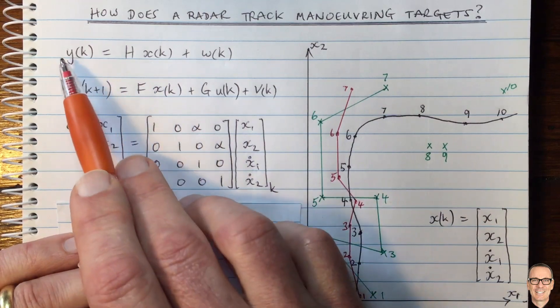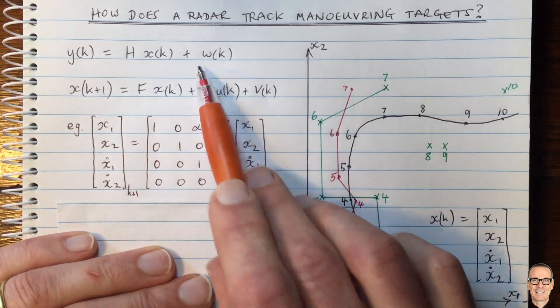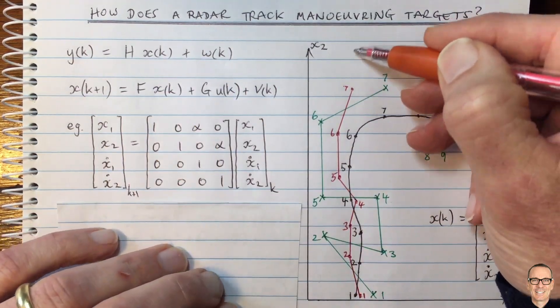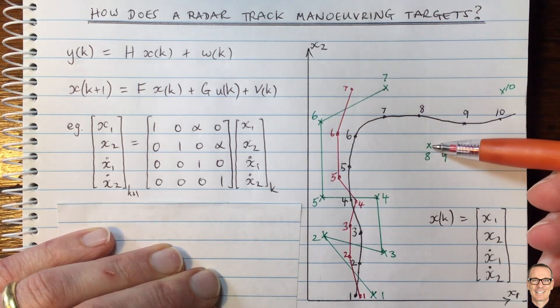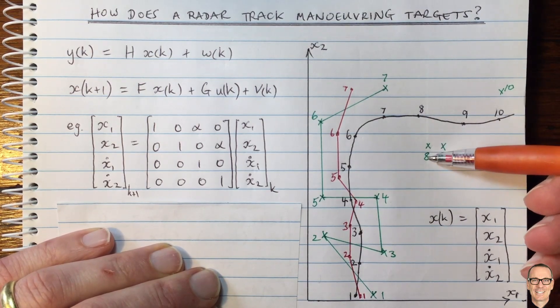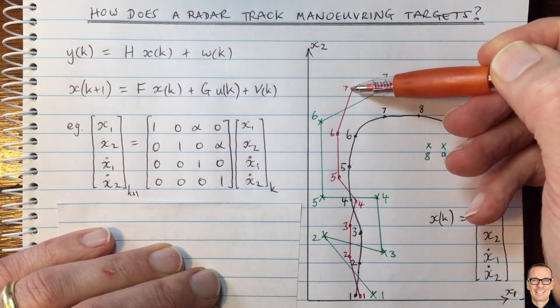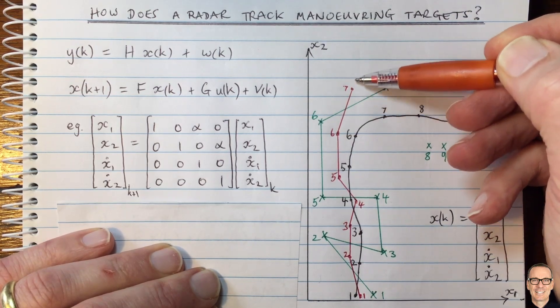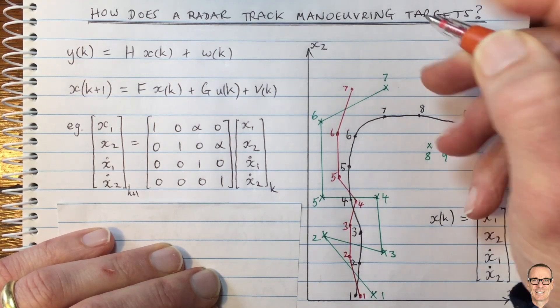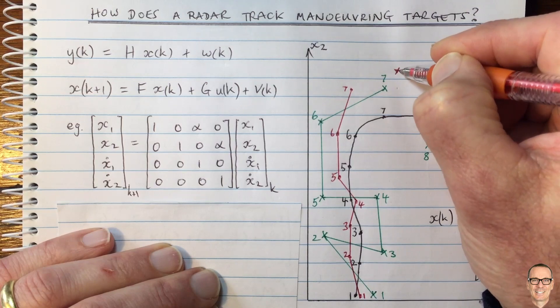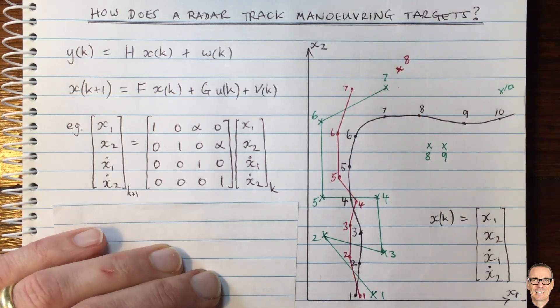So instead of estimating that the next position would be up here, we would now take a lot of notice of this next measurement at time eight, and the filter would be giving a much greater weighting to that and it would be predicting that the next location would be somewhere over here. Okay, so that's one approach.